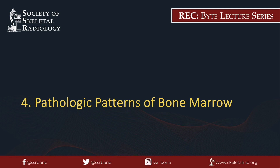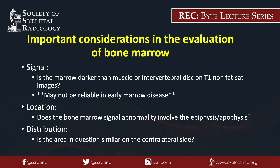Next, let's talk about the pathologic patterns of bone marrow. If bone marrow is darker than muscle on T1-weighted images, this is worrisome for a bone marrow replacement process. Regarding location, the epiphysis should be the last site to convert from yellow to red marrow with red marrow reconversion, so if there is less fat signal within the epiphysis compared to the metaphysis on T1-weighted images, this is not normal. Lastly, if bone marrow signal is asymmetric compared to the contralateral side, further investigation is also required.